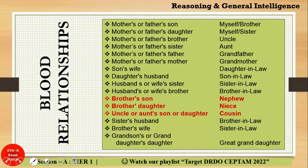Before going further, you should know common blood relationships. Father's son is either yourself or your brother. Father's daughter is either yourself or your sister. Some relationships are confusing: a brother's son is called a nephew, a brother's daughter is called a niece, and an uncle's or aunt's son or daughter is called a cousin. These three relationships typically confuse students. You can take a screenshot of these relationships for reference while solving practice questions.